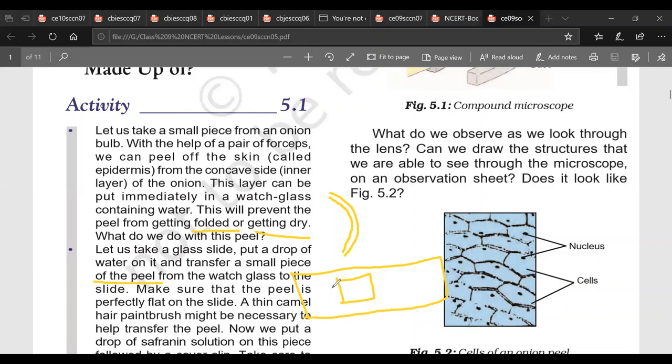And then on this peel we keep another, after safranin we put a drop of glycerin and then we put another very very thin piece of glass that is cover slip. One precaution we have to take while keeping the cover slip that it should be kept very very slowly to avoid entry of air bubbles. And one more precaution while transferring this peel from the watch glass we use paint brush so that cells are not damaged. And with the help of paint brush we unfold the peel because peel should not be folded otherwise clarity will not be much.